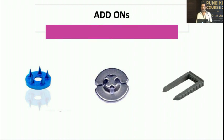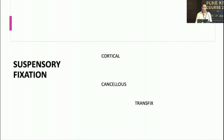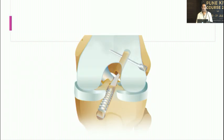Additional fixation aids like washers or staples can supplement — but not replace — primary fixation, useful in revision cases where more stability is needed. The cancellous suspensory transfix method was used for many years but is now largely obsolete, as its transtibial approach raises questions about anatomical accuracy. Cortical suspensory fixation via a transportal approach is simpler, easier, and more anatomical.